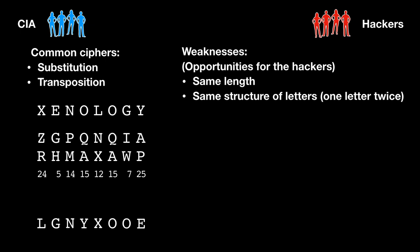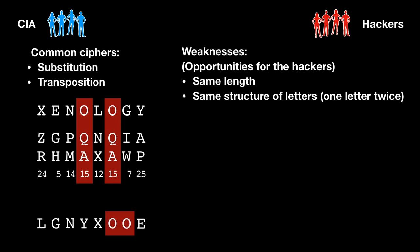For example, 'xenology' has two O's — the first encryption has two Q's, the next one two A's, and so on. Considering these weaknesses, hackers can create a list of 10 words that will allow them to recognize any of them even if encrypted.